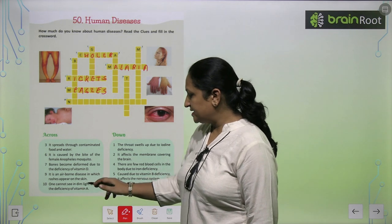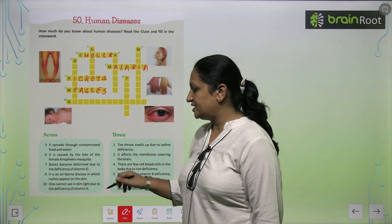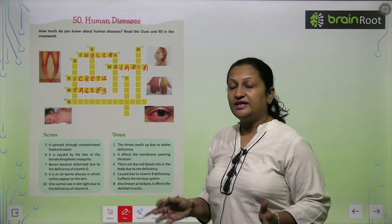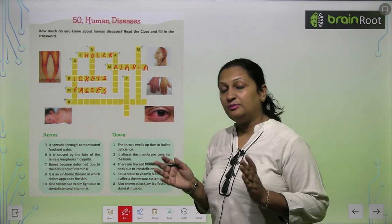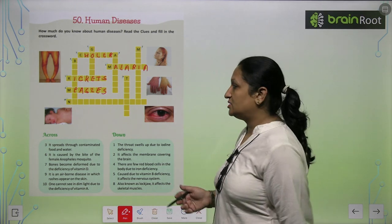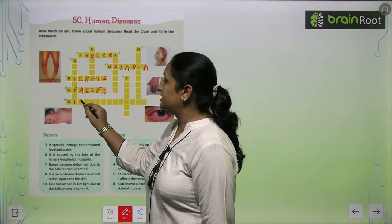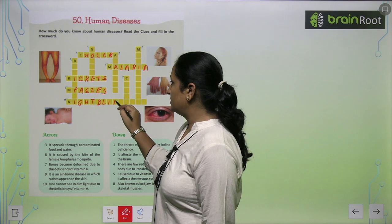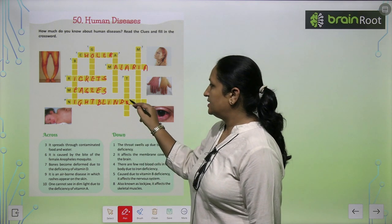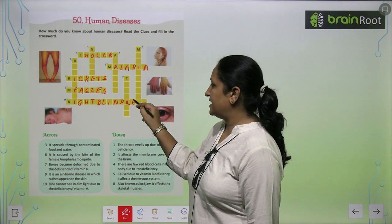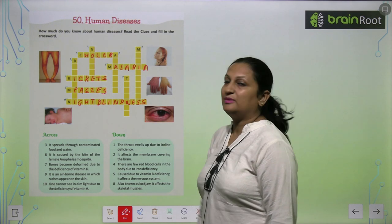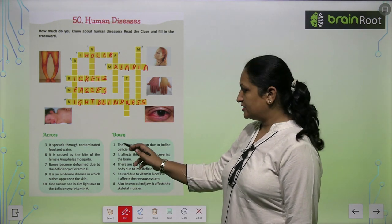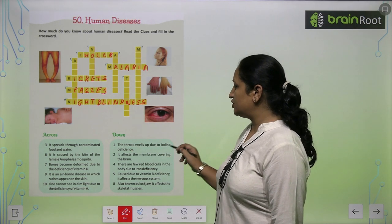And the last, tenth one, children: One cannot see in dim light due to deficiency of Vitamin A. So if Vitamin A is low in your body, the disease you get is called Night Blindness — N-I-G-H-T B-L-I-N-D-N-E-S-S, Night Blindness.